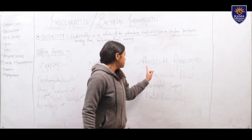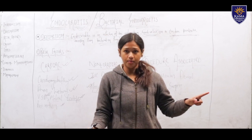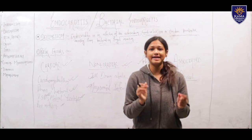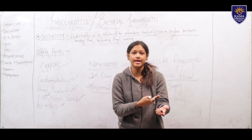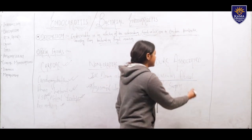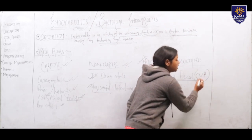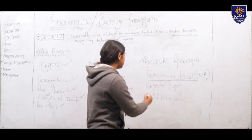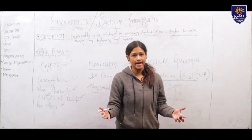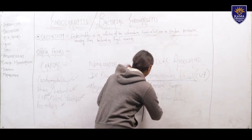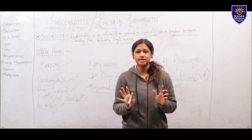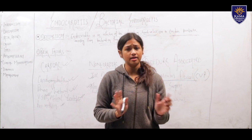The third category is procedure-associated risk factors. Bacteria can enter the body through certain procedures. First, intravascular devices — inside blood vessels like arteries and veins, when we place a cannula or central venous catheters, bacteria can enter. Then urogenital surgeries and obstetric surgeries can also allow entry. Then dental procedures: the main causative agent of endocarditis can enter through dental procedures like cleaning and root canal therapy.